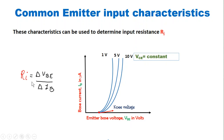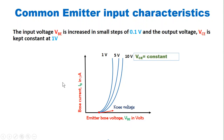This input resistance RI in case of common emitter configuration is equal to the ratio of the change in base to emitter voltage to the change in base current. For finding these input characteristics, the input voltage VBE is increased in small steps of 0.1 volt and output voltage VCE is kept constant at 1 volt, and different values of base current are recorded.